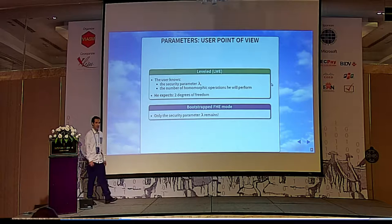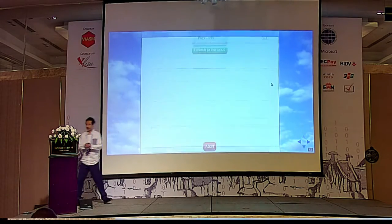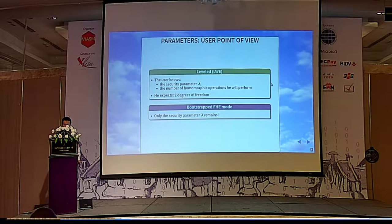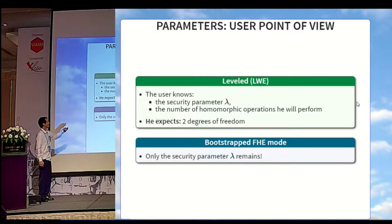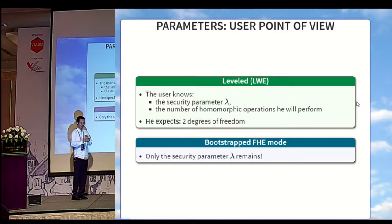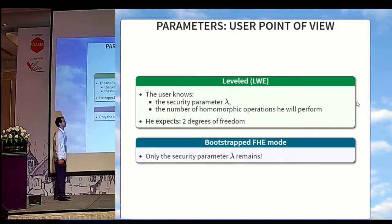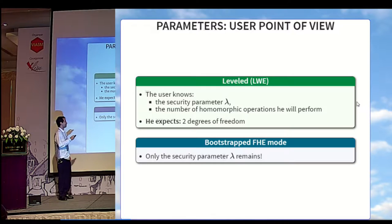We decided to take the problem from the user's point of view. The user knows exactly two things: the first one is the security parameter lambda, and the second one is the number of homomorphic operations he will perform. That means he knows exactly two degrees of freedom. In the case of homomorphic bootstrap mode, the second one disappears because the number of operations is unlimited. When we define LWE, we propose to redefine it with only two parameters: the secret key size n, and the error rate alpha. Since we have only two degrees of freedom, the security parameter has to be a function of these two parameters.